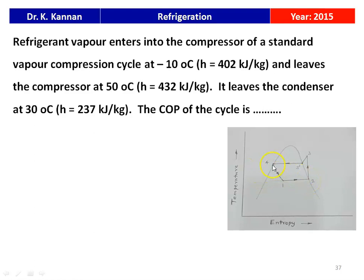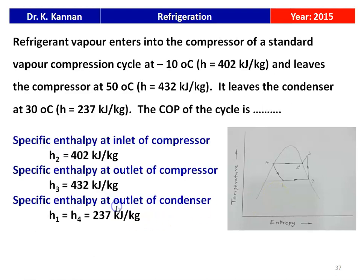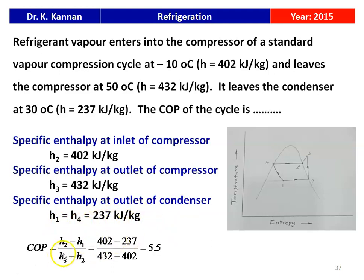The given data: H2 (inlet of compressor) equals 402 kJ/kg; H3 (outlet of compressor) equals 432 kJ/kg; H1 equals H4 (outlet of condenser) equals 237 kJ/kg. COP equals (H2 minus H1) divided by (H3 minus H2), which is (402 minus 237) divided by (432 minus 402), equal to 5.5. The COP of the cycle is 5.5.